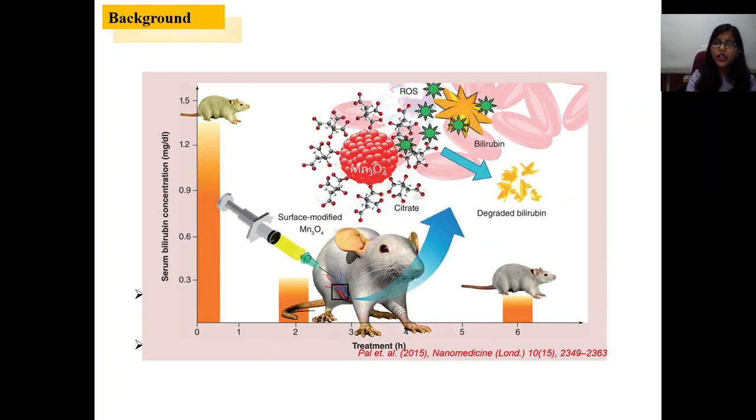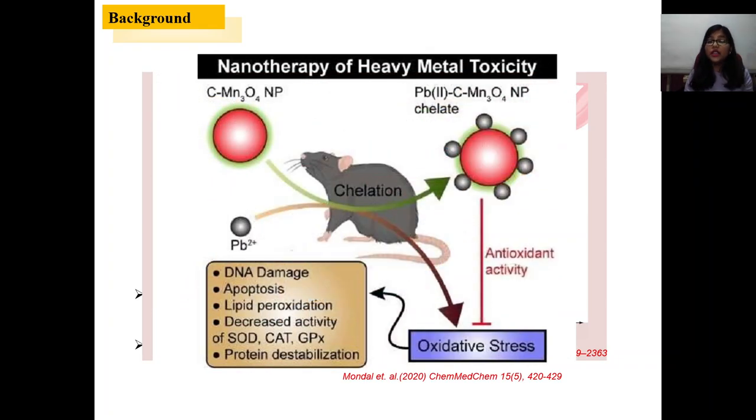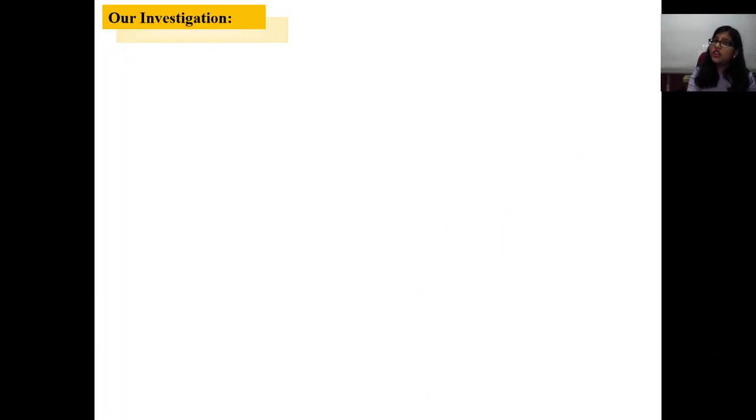So what we have done with this nanoparticle? This nanoparticle generates ROS and destroys bilirubin. So in mice with hyperbilirubinemia, the serum bilirubin level comes down within the normal range in only two to three hours. And also we have seen that it can clear lead or heavy metals from the organs and circulation, and also recover the damage the heavy metal did via ROS generation. So one nanoparticle that can generate ROS and that can also recover the damage done by ROS. This is really interesting, so we have started our investigation.